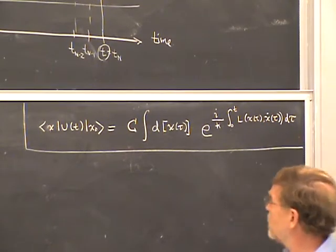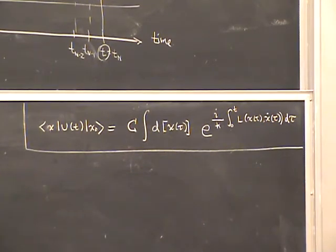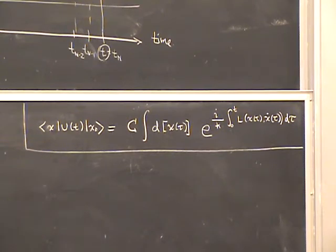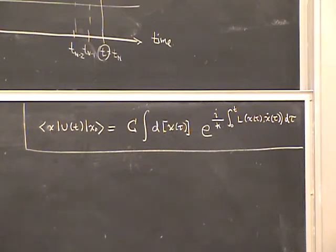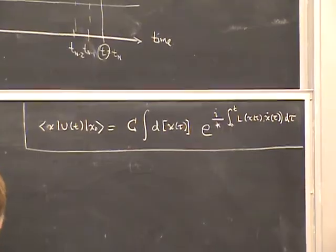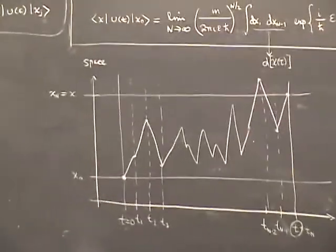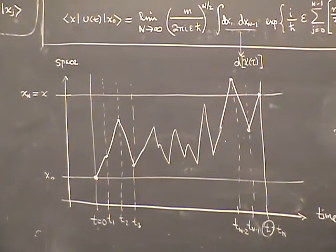However, it's important to be aware that this is just notation, and there are things to keep in mind. Let's go back to the picture of the discretized path and the jagged nature of it. Recall that each of the intermediate variables of integration X₁ through X_{N-1} ranges from minus infinity to plus infinity.